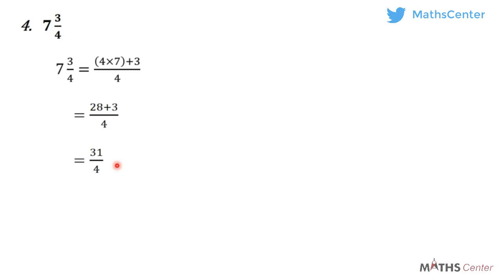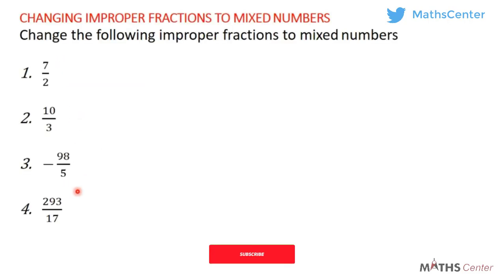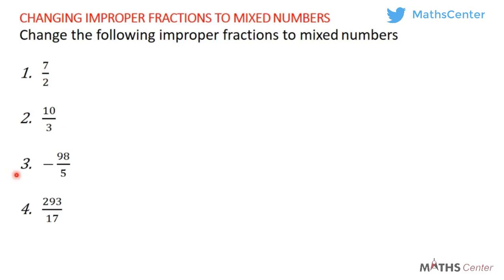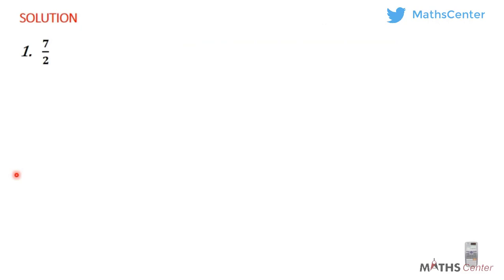Sometimes, after working a particular question, the final answer we are going to have will be in improper fraction form. Usually, when we have our answers in improper fraction form, we represent our final answer as mixed numbers or mixed fractions. So we are going to learn how to change improper fractions to mixed numbers. In the previous section, we learned how to change mixed numbers to improper fractions. This time, we are going to change improper fractions to mixed numbers.